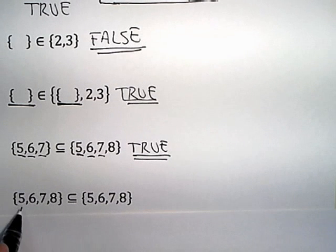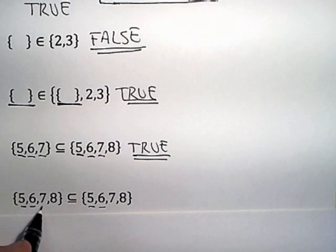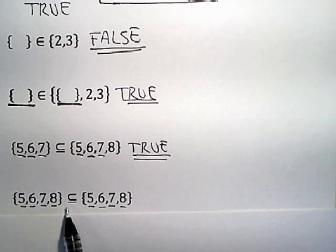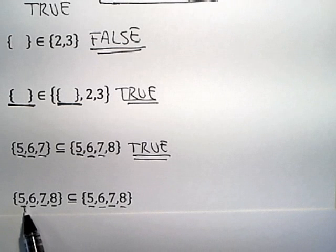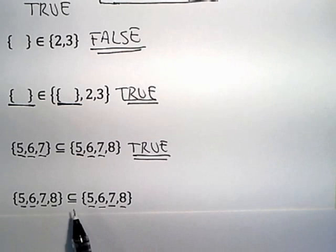Now, if I do the same thing I did before, there's a 5 in both, there's a 6 in both, there's a 7 in both, there's an 8 in both. Now, as long as every element that appears on the left appears as an element on the right, then it is a subset.